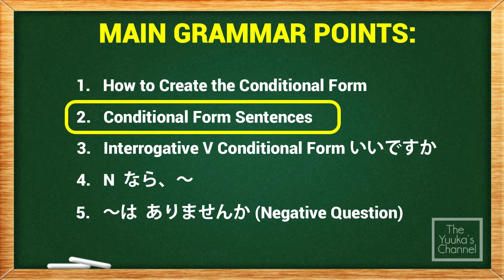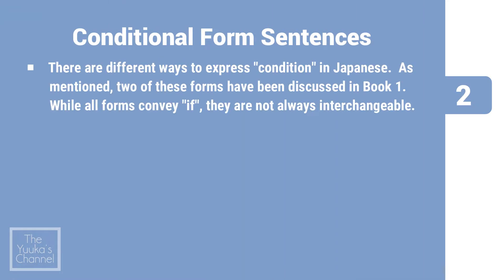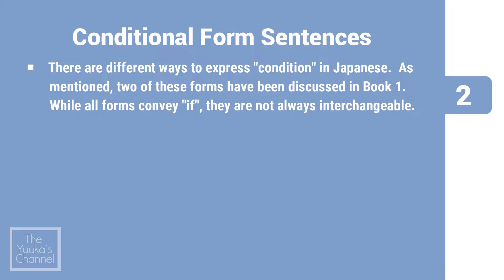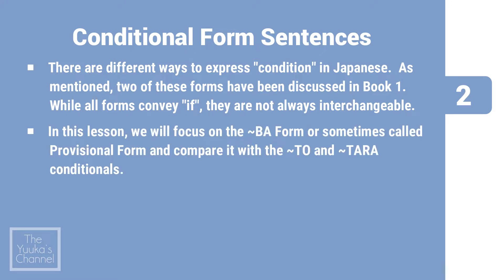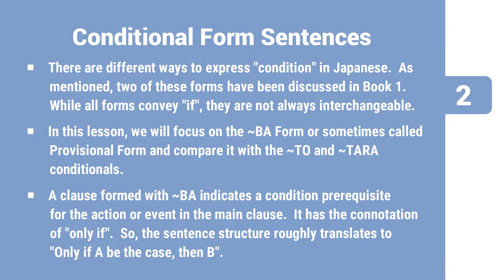Conditional form sentences. There are different ways to express condition in Japanese. As mentioned, two of these forms have been discussed in Book 1. While all forms convey 'if,' they are not always interchangeable. In this lesson, we will focus on the ba form, or sometimes called the provisional form, and compare it with the to and tara conditionals. A clause formed with ba indicates a condition prerequisite for the action or event in the main clause. It has the connotation of 'only if' — roughly: only if A be the case, then B.